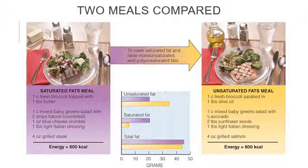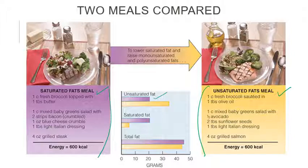Two meals compared: a saturated fat meal versus an unsaturated fat meal. Both total about 600 calories, but to lower saturated fat and raise monounsaturated and polyunsaturated fat, you need to change how you eat. The saturated fat meal has far less unsaturated fat and much more saturated fat. Think about how saturated fat is hard at room temperature — what happens when you consume it? Unsaturated fat is liquid at room temperature. Consider the difference between hard fat and liquid fat that you're consuming in your body.